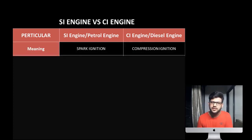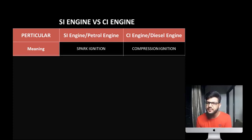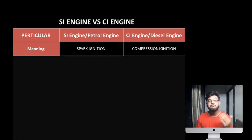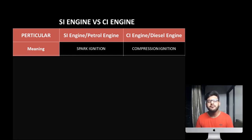The first point is meaning. What is SI? It is Spark Ignition engine — that means it is a petrol engine. And what is CI? That is Compression Ignition engine, and we know it as a diesel engine. So if in an exam it is asked what is the difference between SI and CI, or between petrol and diesel engine, both will be similar in many cases and you can write these differences for both.